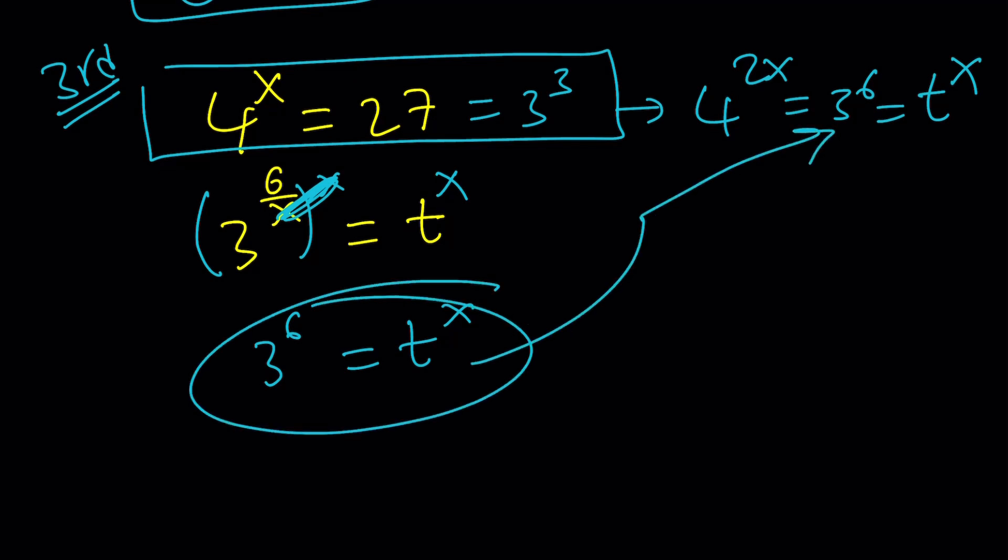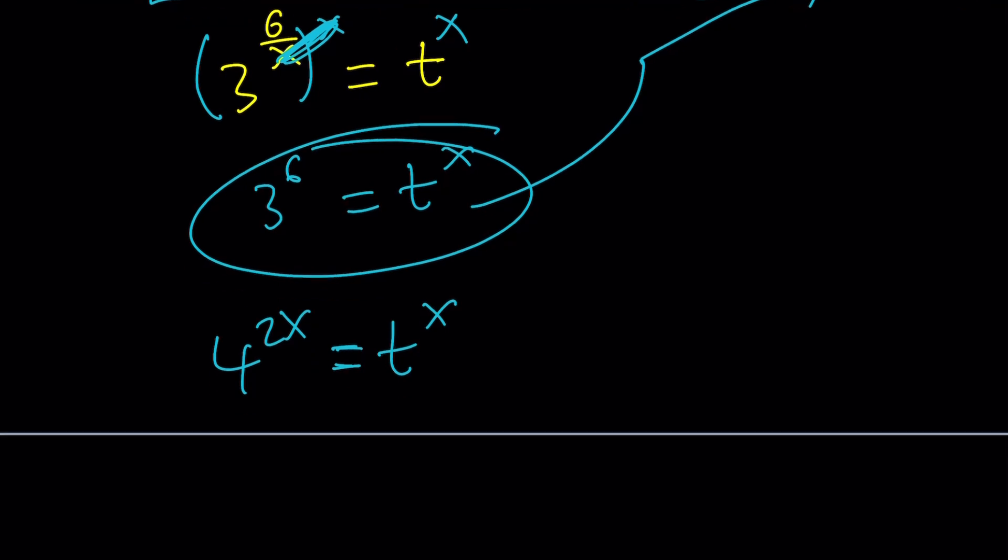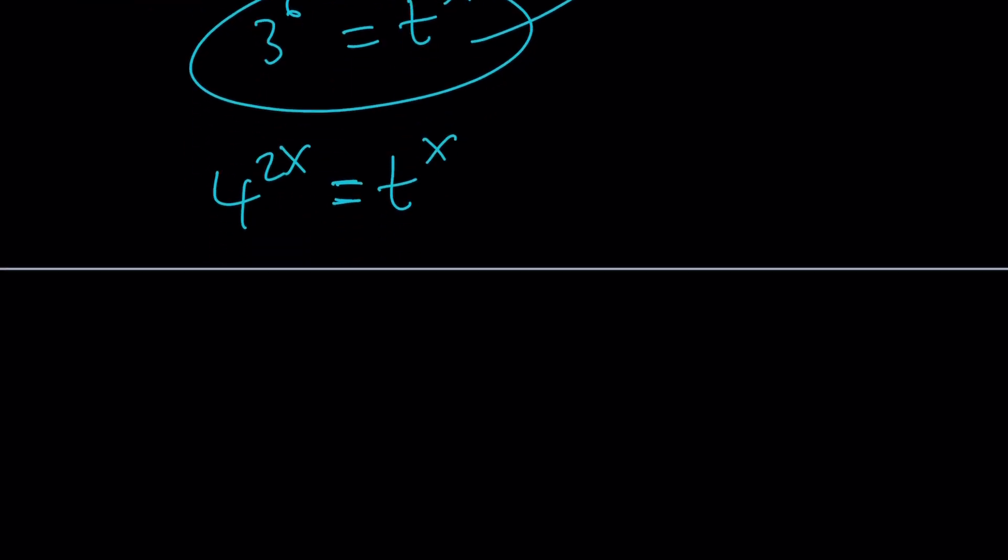Now we get the following equation: 4 to the 2x equals t to the x. And 4 to the 2x can be written as 4 to the 2 to the x equals t to the x, which is 16 to the power of x.